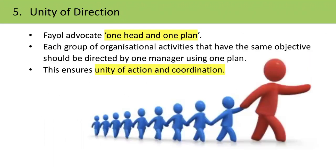The next principle is Unity of Direction, which means one head, one plan. Each group of organizational activities having the same objective should be directed by one manager using one plan. For example, if a company deals with cars, bikes, and other products, the car unit should have a different plan and a different manager, and the bike unit should have a different plan and a different manager. One head, one plan — you move in one direction.